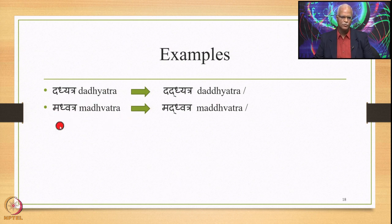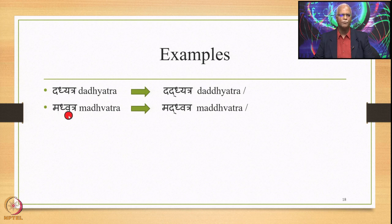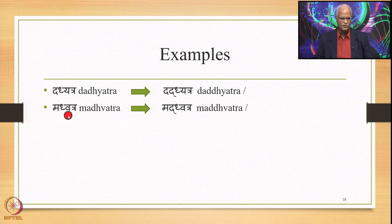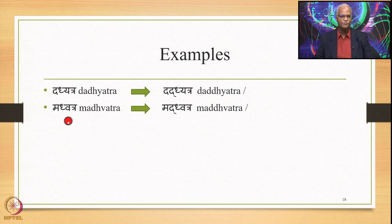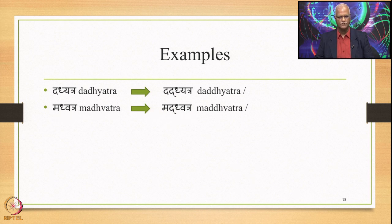Similarly Madhvatra: Madhu + Atra gives Madhvatra. Here A after Ma is Ach, followed by D (Yar), followed by V (Anach) — V is a consonant, not a vowel. So we have Ach + D (Yar) + V (Anach). The conditions for 8.447 are fulfilled, so D is substituted by its two occurrences, giving Ma + Dha + Dha + Vatra. The first Dha is substituted by the application of Jhalamjash Jhashi, giving Madhvatra. Optionally we also get Madhvatra without reduplication.